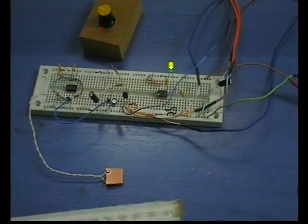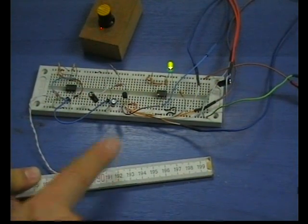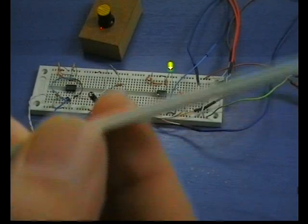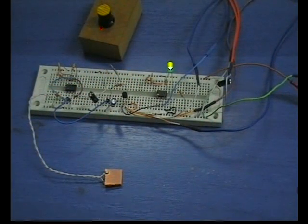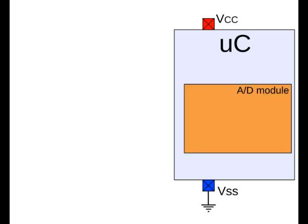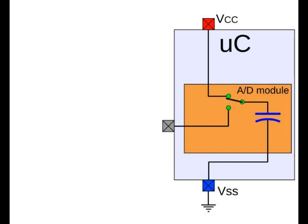There is another sophisticated method to make a capacitance touch button, often called capacitance voltage divider. To explain this method, I will use a simple animation. Suppose that this box over here is a microcontroller with a power supply pin and a ground pin. This microcontroller must also have an analog to digital converter module. This module has an internal small capacitor to operate, with one side of it connected to the ground. The other side of the capacitor goes to the internal switching module, which can connect it once to the power supply and once to the output pin of the analog to digital module, usually labeled as analog input.